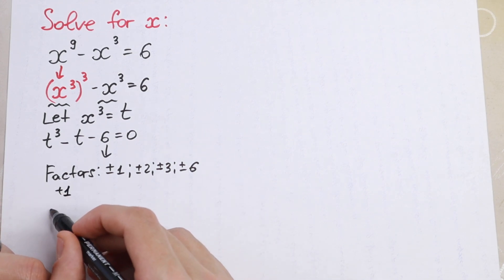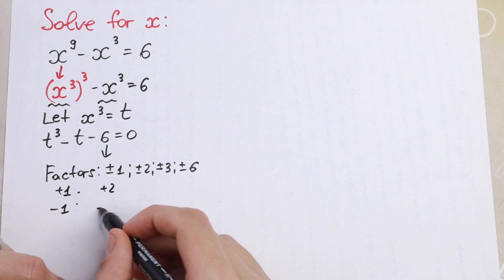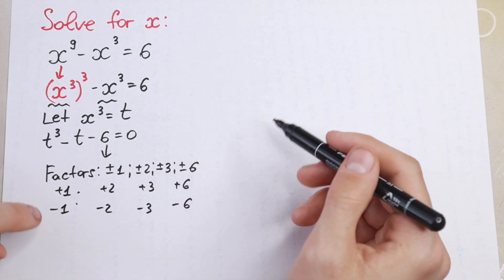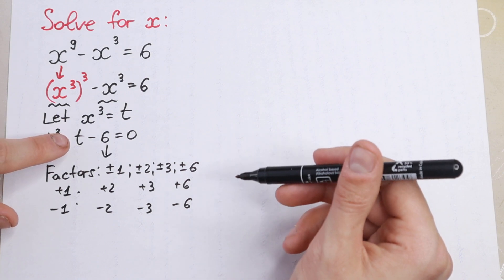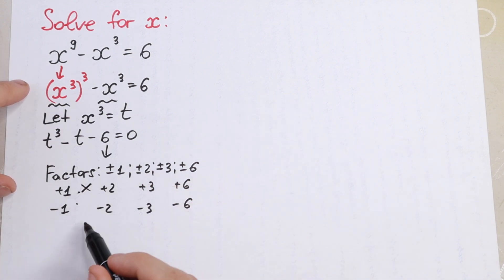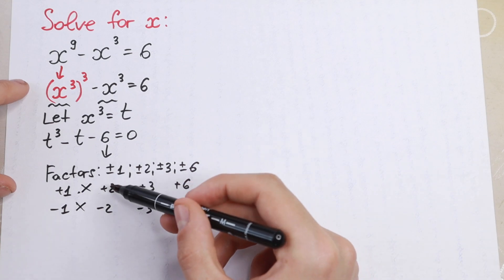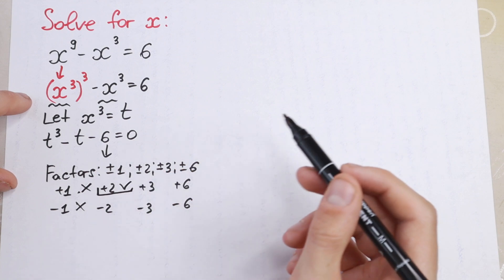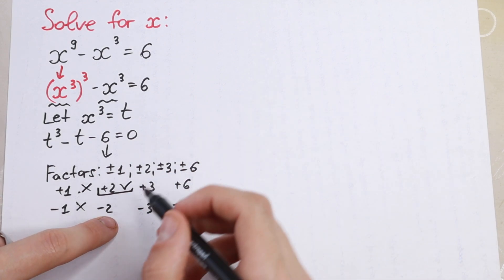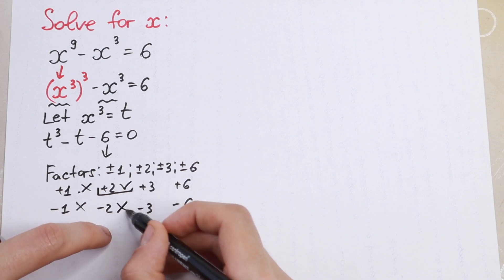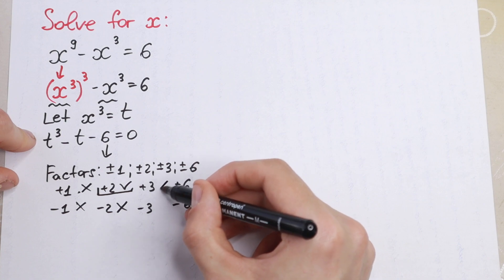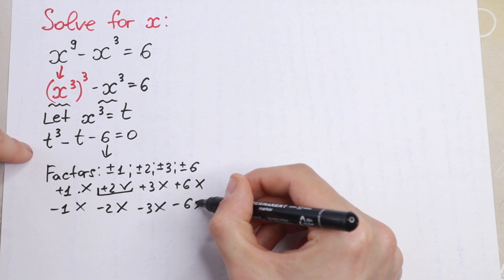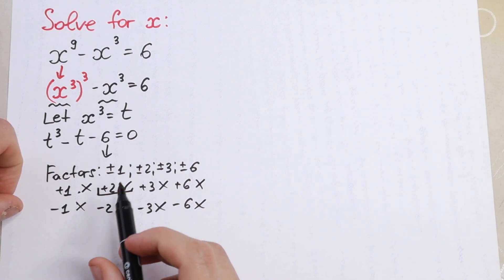Let's check these factors quickly. Plus 1 and minus 1 are not good, because minus 1 plus 1 minus 6 does not equal zero. For t = 2: two cubed is 8, minus 2, minus 6 — this equals zero, so this is good for us. Minus 2 is not good since positive 2 already works. For 3: 27 minus 3 is not good, and minus 3 as well. And 6 will not work because we'll get 216, which is not good for us. So only one factor is good: t equals positive 2.